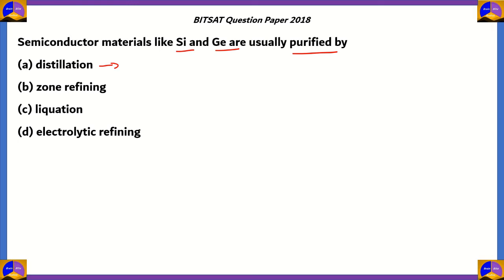Distillation involves forming vapors of a substance and recondensing them in another vessel to get a pure product. This is applicable for metals such as mercury and zinc, which have low melting and boiling points, making it easy to form vapors. So option A — distillation — is the wrong answer here since it is primarily used for mercury and zinc.